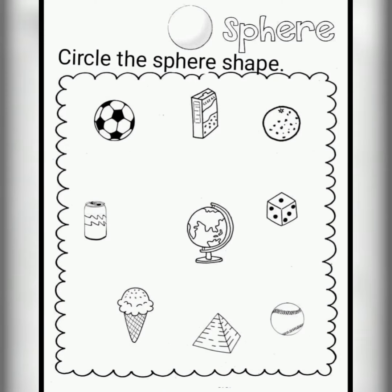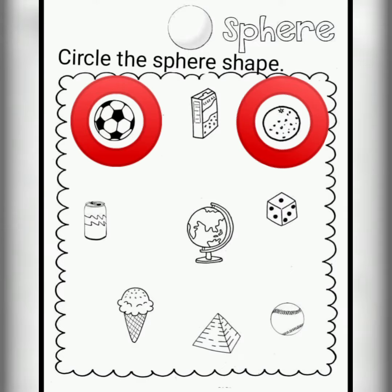Here are some things and you have to circle the sphere shape things — okay, this is your task. We have already studied it before. For example, a ball can be of a sphere shape, an orange can be of a sphere shape.